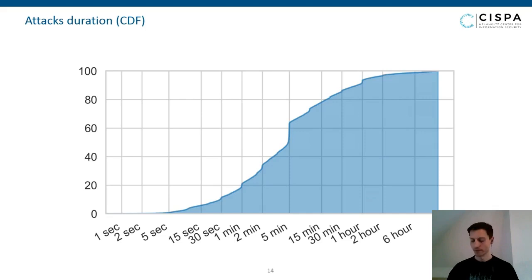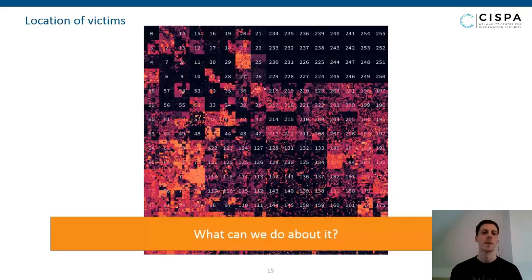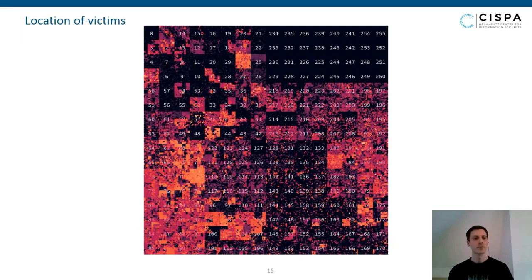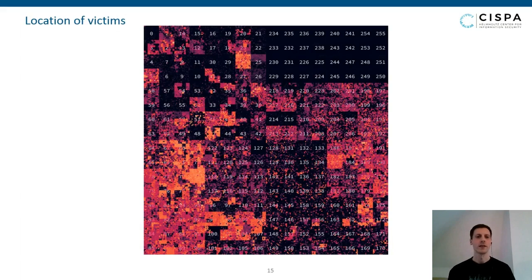The last plot shows the location of our victims. We use a Hilbert curve to plot the entire IP space into a square, where every pixel corresponds to a /16 network and brighter pixels mean more attack victims. What's really prominent is that the internet is almost entirely bright. The only really black squares are reserved prefixes like 127, 10, the upper-right corner of reserved IP blocks, and in the lower IP ranges, blocks belonging to the Department of Defense.